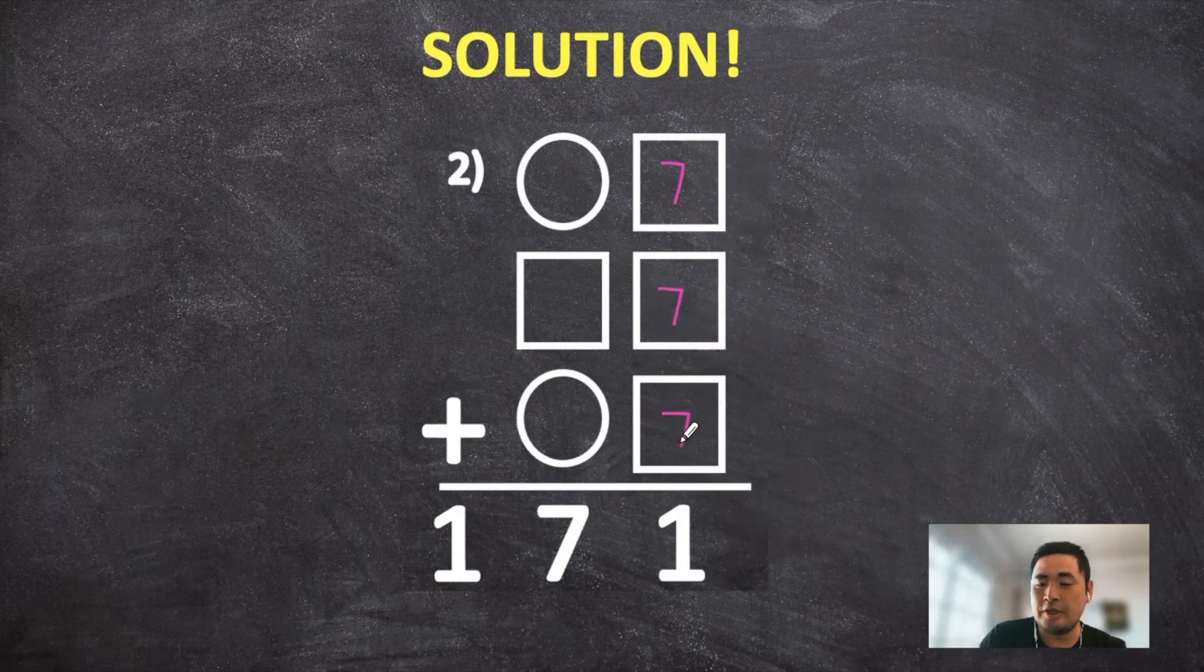So if you have the three sevens here, that would equal 21. So the one down here and then carry the two up on top.